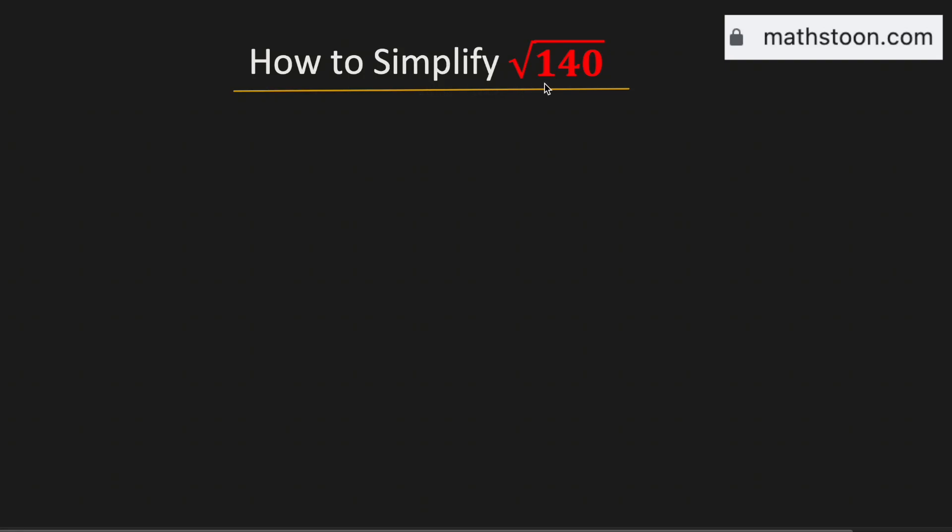In this video, let us simplify the square root of 140. To do so, at first we will write 140 as a product of two numbers. At least one of them will be perfect squares.